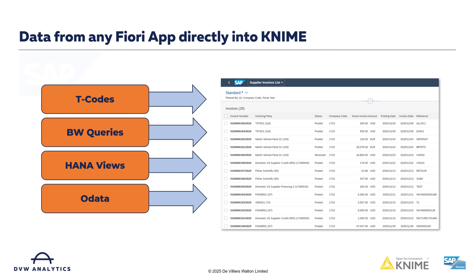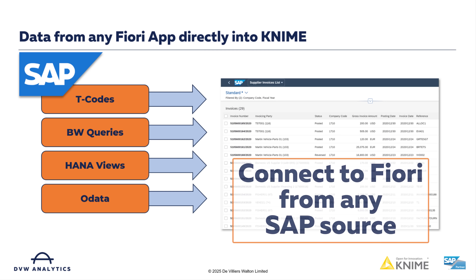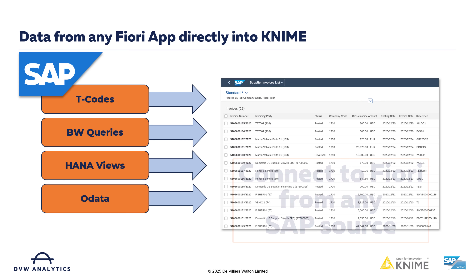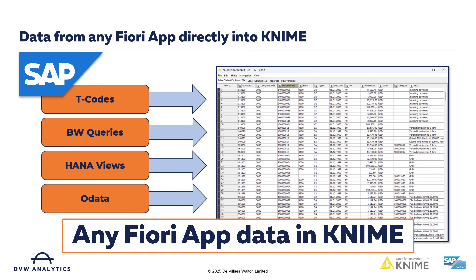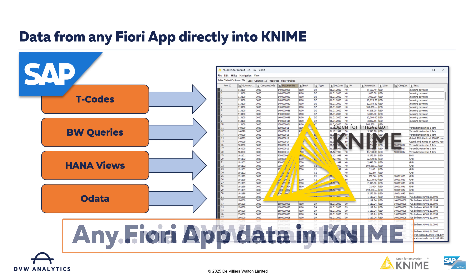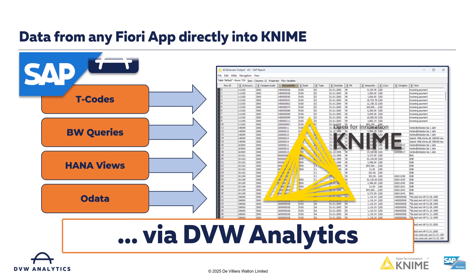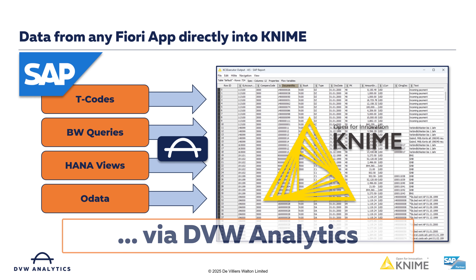The apps are based on various SAP objects such as t-codes, OData reports, HANA views, and even BW reports. Our software here at DVW Analytics allows you to seamlessly connect into all of these and surface the data you need directly within KNIME.